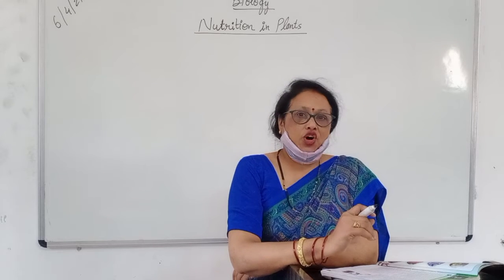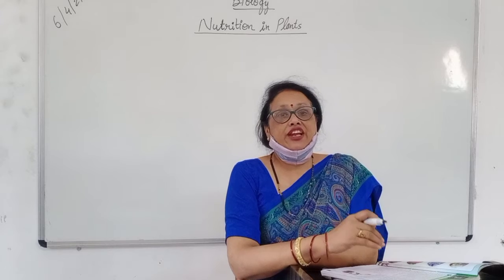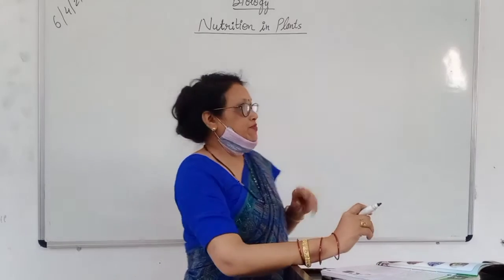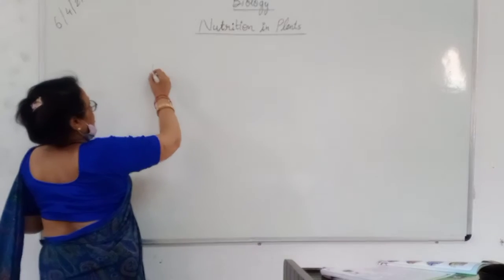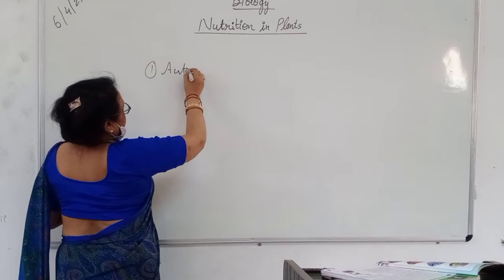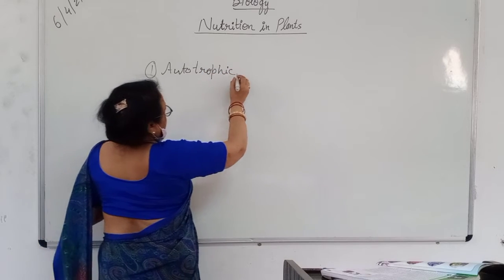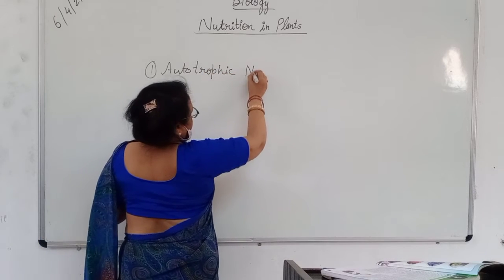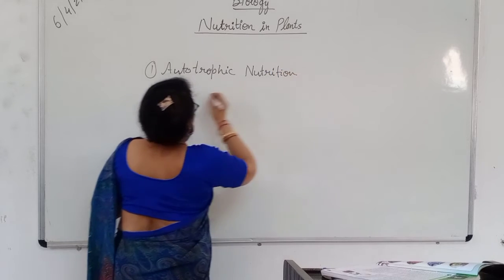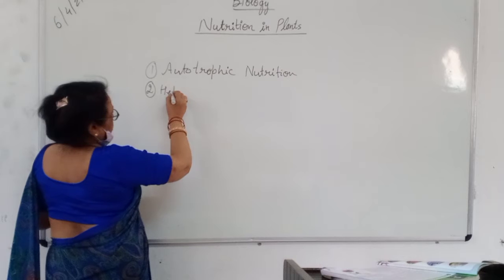Now, how many types of nutrition can we find in living organisms? There are two types of nutrition. Number one: autotrophic nutrition, and number two: heterotrophic nutrition.